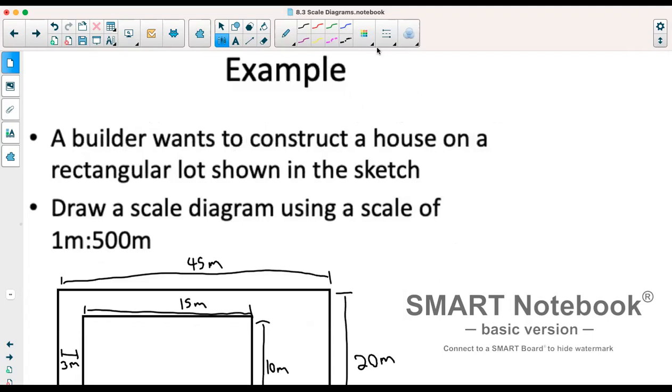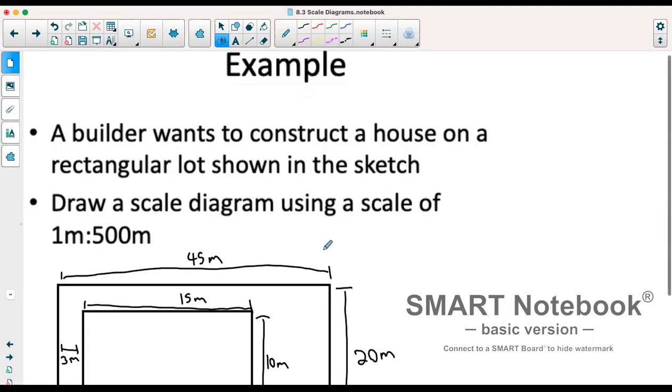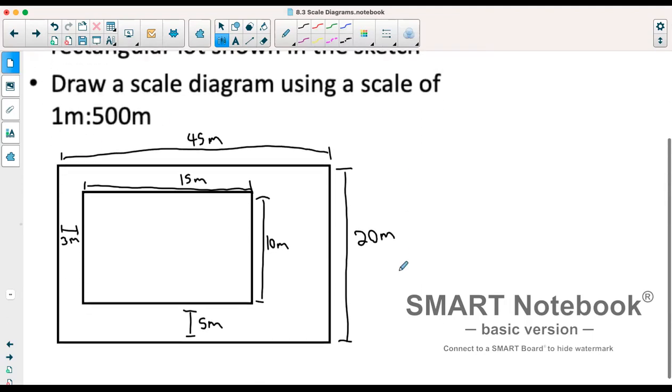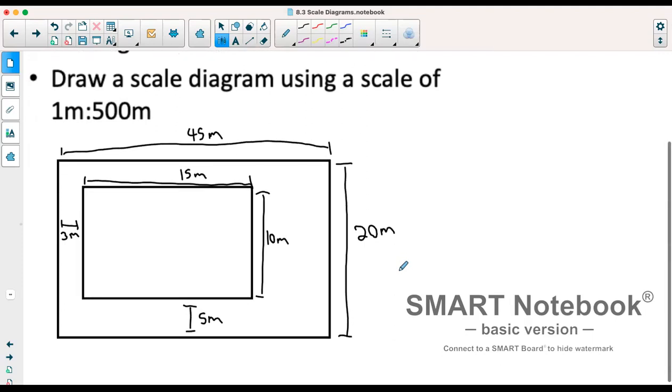So we have this example. A builder wants to construct a house on a rectangular lot shown in the sketch. We're going to draw a scale diagram using a scale of one meter equals 500 meters. So what I would probably actually do before starting to draw this out is just to label each of these with a letter and we will calculate each new one.